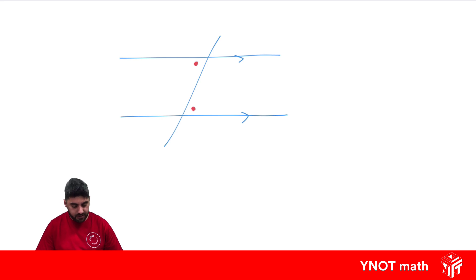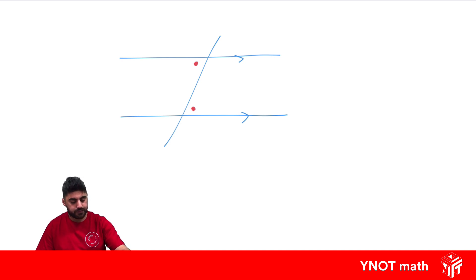These two angles are actually going to be equal to each other. We can see that these two angles are both inside the parallel lines, but they're on opposite sides of the transversal. We call these alternate angles, and they're going to be equal.